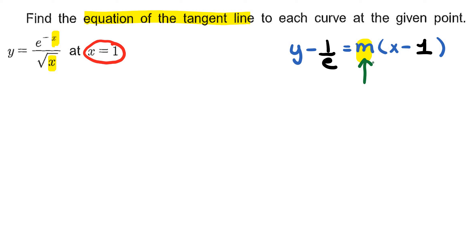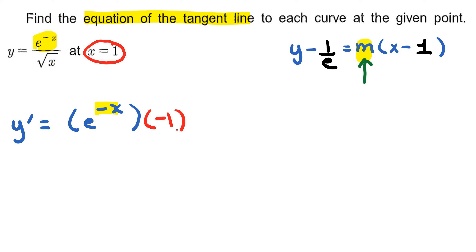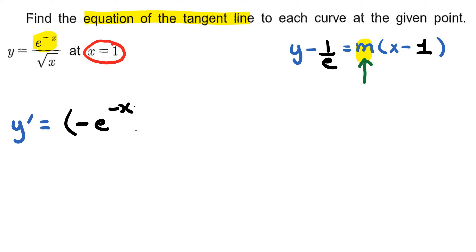The next part of the tangent line is that you need to find the derivative value, which is the slope. So we find the derivative value when x equals 1. For this problem we're going to apply the quotient rule. The derivative of the numerator is e to the power of negative x, and then we multiply by the derivative of the power, which is negative 1. So that gives us negative e to the power of negative x. We multiply that by the denominator, root x, and then the quotient rule states that I subtract the numerator, which is e to the power of negative x.